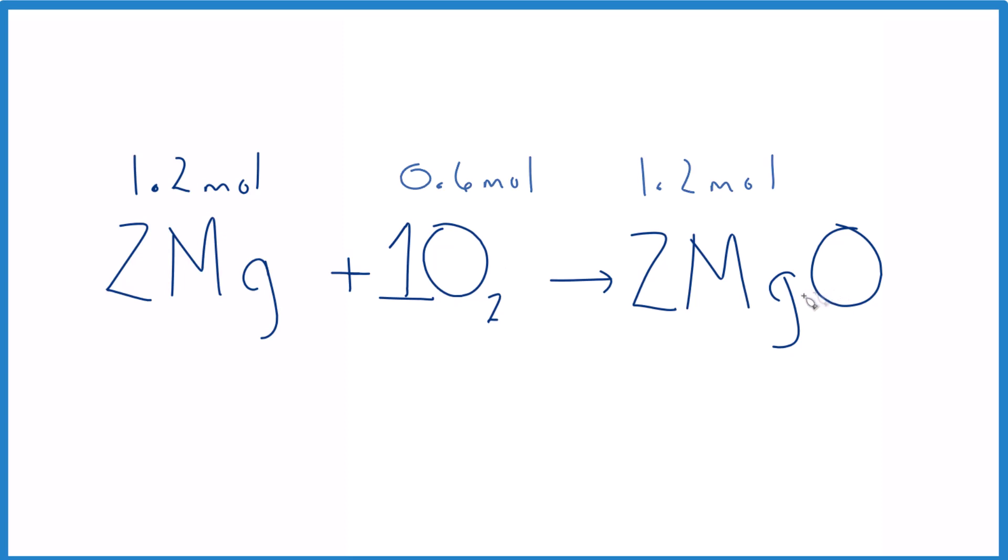We could just set it up as a ratio: 1.2 is to 2 as X is to 1. And we just cross multiply: 2 times X equals 1.2 times 1.